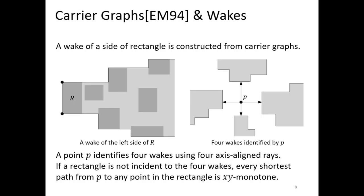From the two endpoints of the left side, we draw two XY-monotone paths which go rightwards until they hit rectangles, and then one path from the upper endpoint goes upwards, and one path from the lower endpoint goes downwards. The wake of the left side is the region bounded by those two XY-monotone paths. From the point on the left side to any point interior to the wake, there exists a shortest path contained in the wake, and it is XY-monotone.